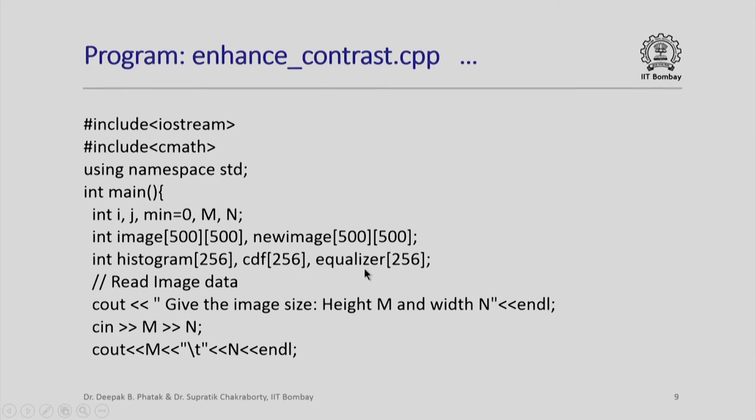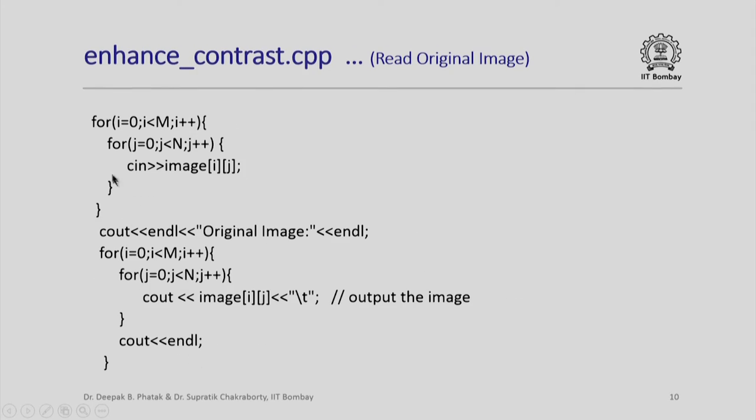If a pixel value is say 58, I will just go to the 58th entry into this equalizer array and that value will be the new pixel value for the new image. I now read the image data. First I collect the size. Notice here that in the cout statement I have used another interesting string backslash t. This is the special character which represents a tab character. You will notice in the program listing given in the courseware that the output contains values separated neatly by a tab. I now read the entire image. I just need a nested iteration i equal to 0 to m minus 1 and j equal to 0 to n minus 1. The original image is also produced as an output just for you to verify that your data is correct.